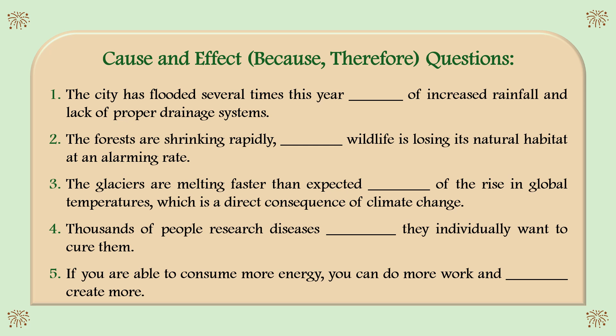Three: the glaciers are melting faster than expected _____ of the rise in global temperatures, which is a direct consequence of climate change. Four: thousands of people research diseases _____ they individually want to cure them. Five: if you are able to consume more energy, you can do more work and _____ create more.